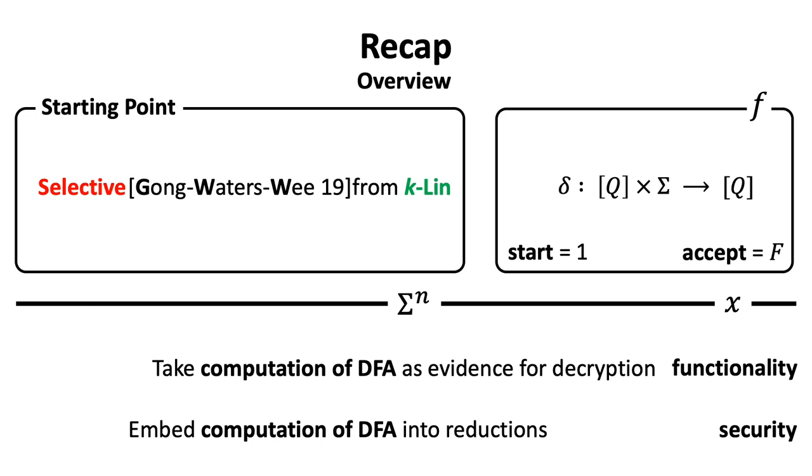To carry out this strategy, they must assign two distinct computations of DFA to functionality and security respectively. In more detail, the so-called forward computation is for functionality, while the so-called backward computation is for security.